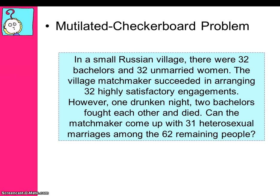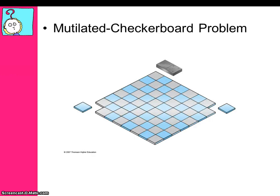It should be pretty obvious from this second problem that the answer is no. Because two bachelors died, it's not possible to make up 31 heterosexual pairings among the remaining 62 people. This problem is pretty easy to understand, but in fact it's an analogy for that checkerboard problem.